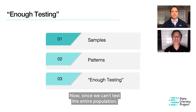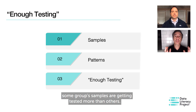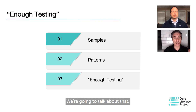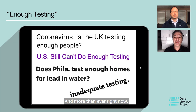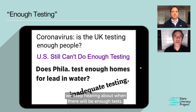Now, since we can't test the entire population, some groups — some samples — are getting tested more than others. We're going to talk about that: how do these different samples affect the data we see? What patterns are we looking for? And more than ever right now, we keep hearing about when there will be enough tests.